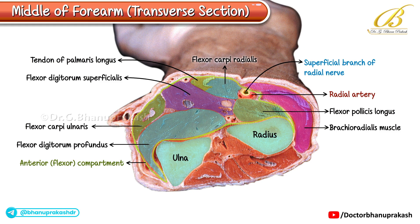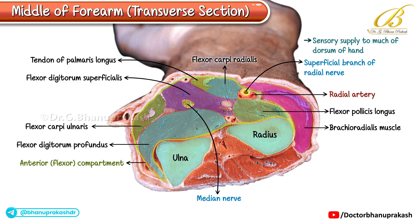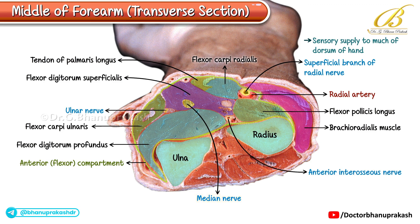The superficial branch of the radial nerve provides sensory supply to much of the hand. In the midline, sandwiched between the flexor digitorum superficialis and flexor digitorum profundus, we can spot the median nerve. On the medial side, deep to the flexor carpi ulnaris, runs the ulnar nerve. The ulnar nerve supplies the flexor carpi ulnaris and the medial half of the flexor digitorum profundus, while all other muscles in the anterior compartment are supplied by the median nerve and its deep branch, the anterior interosseous nerve.